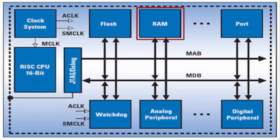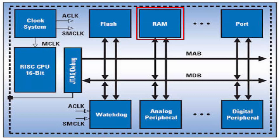The RAM range is from 128 bytes to 2 kilobytes. From family to family, the flash memory range and RAM range change accordingly.